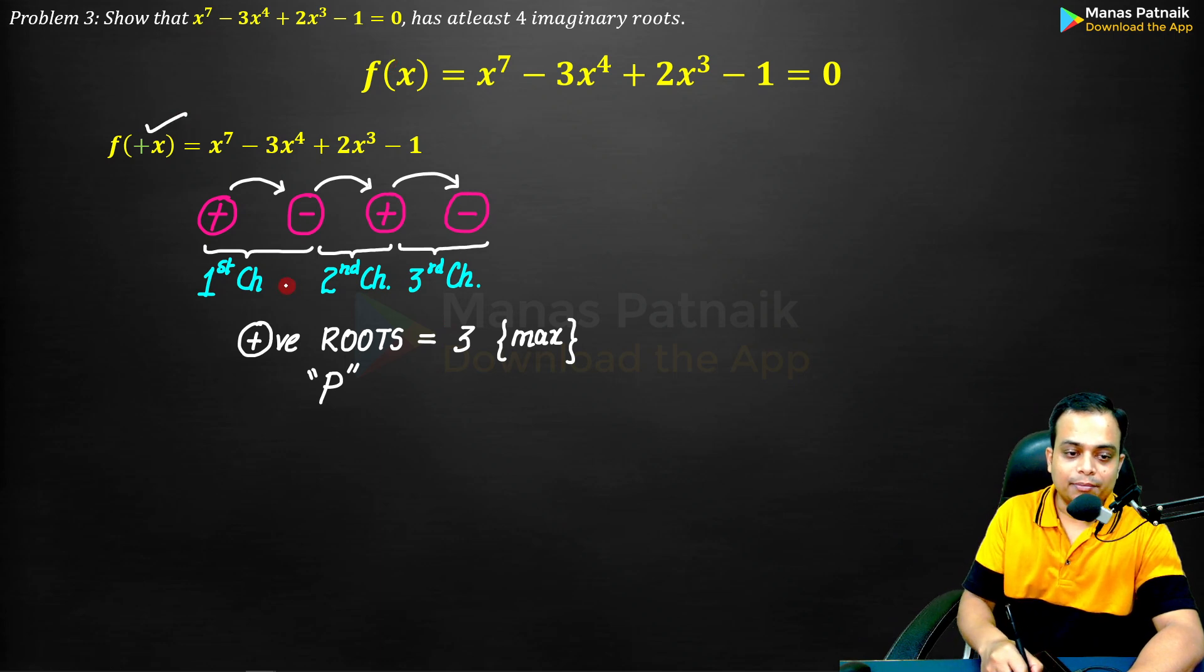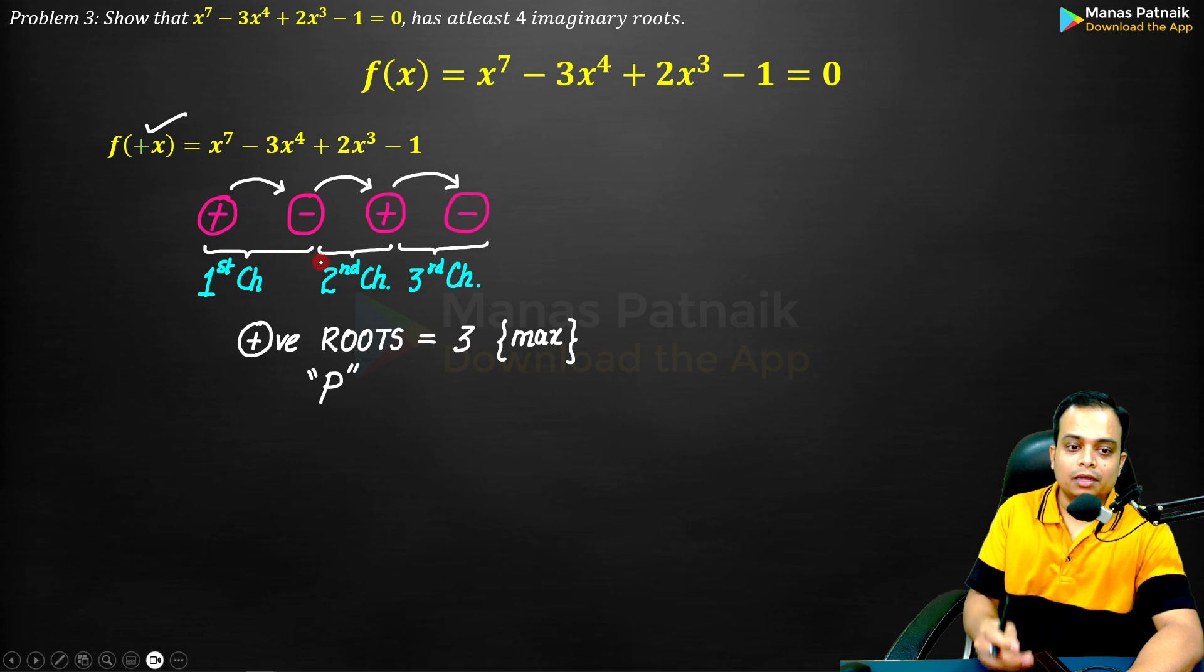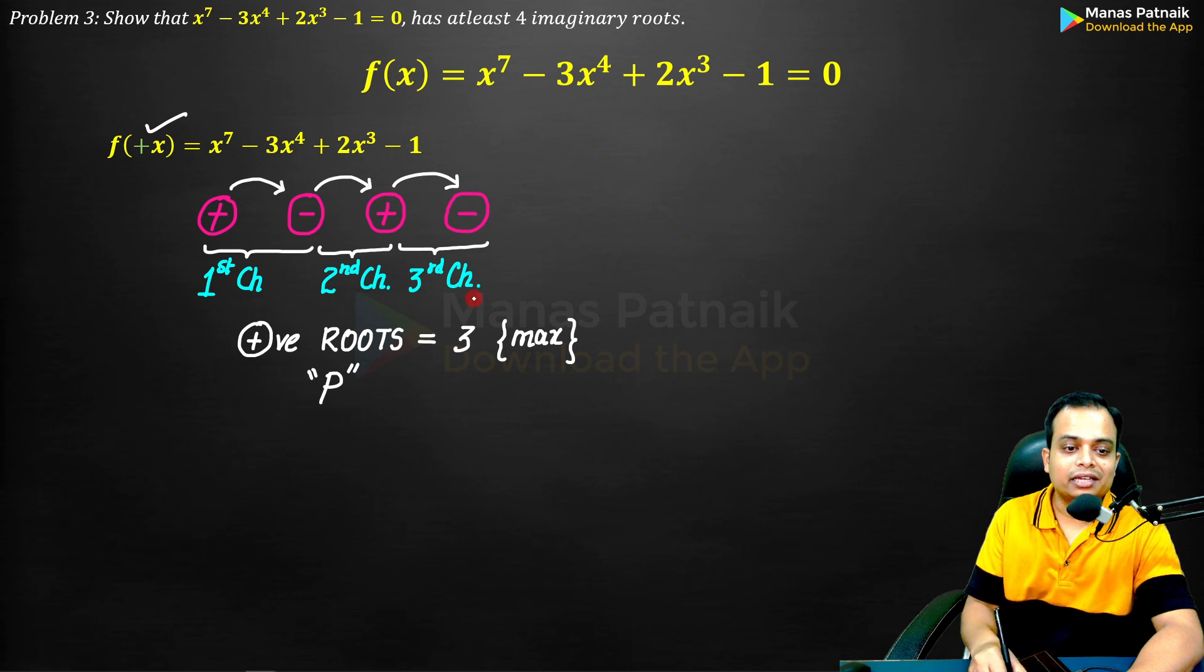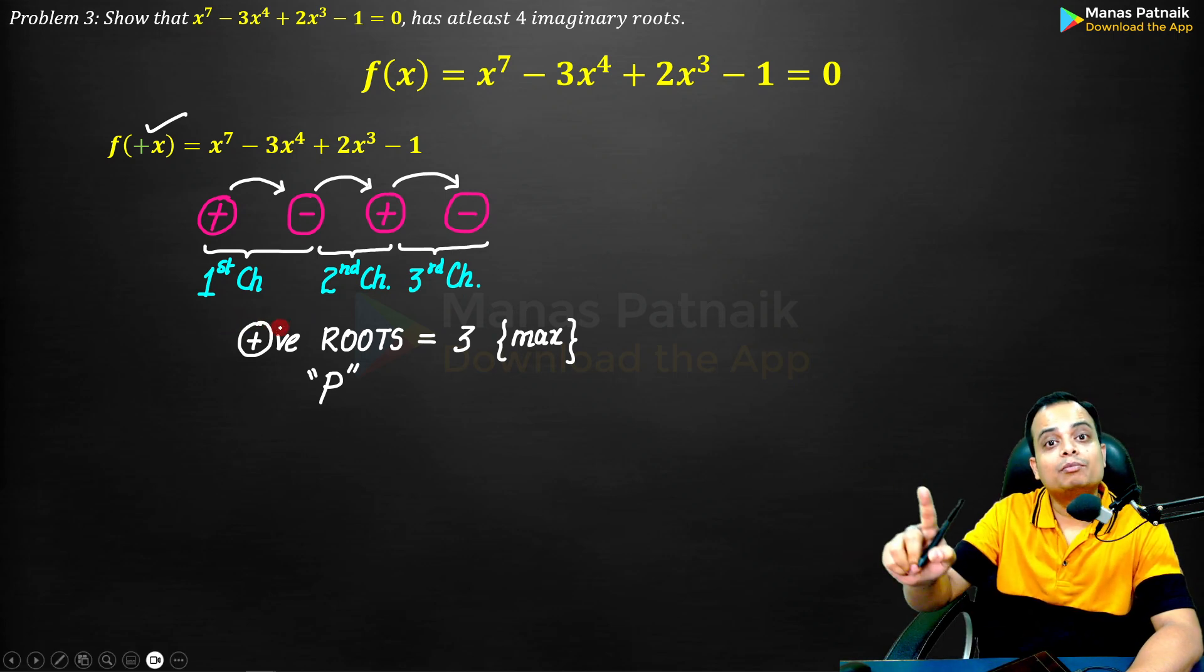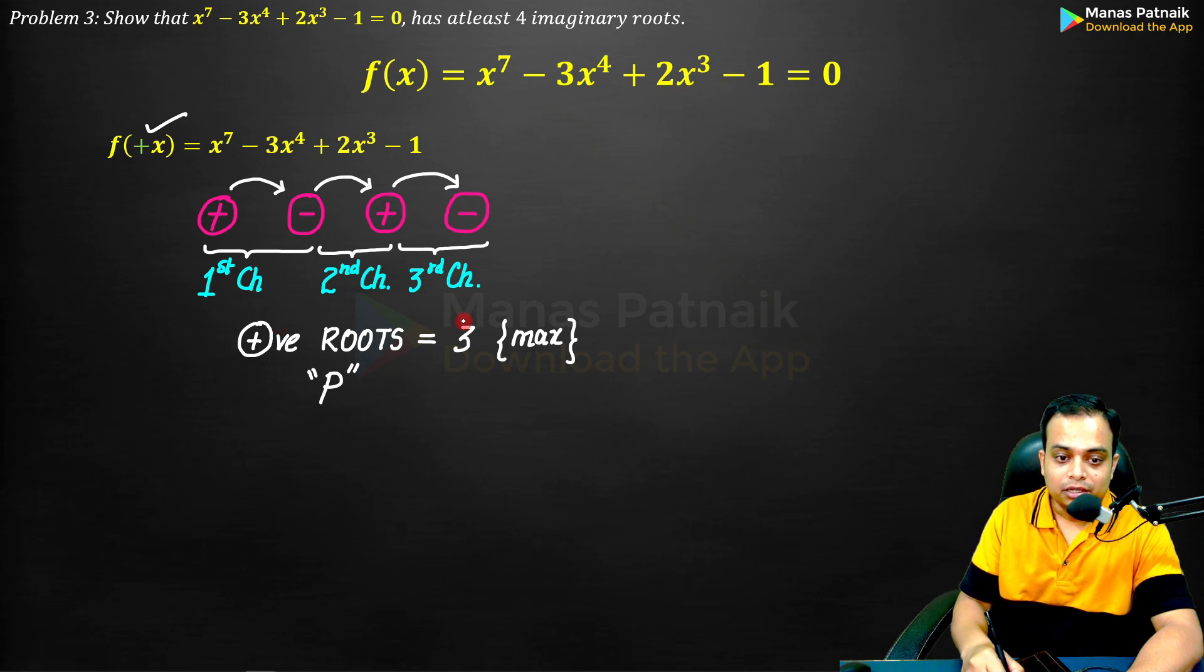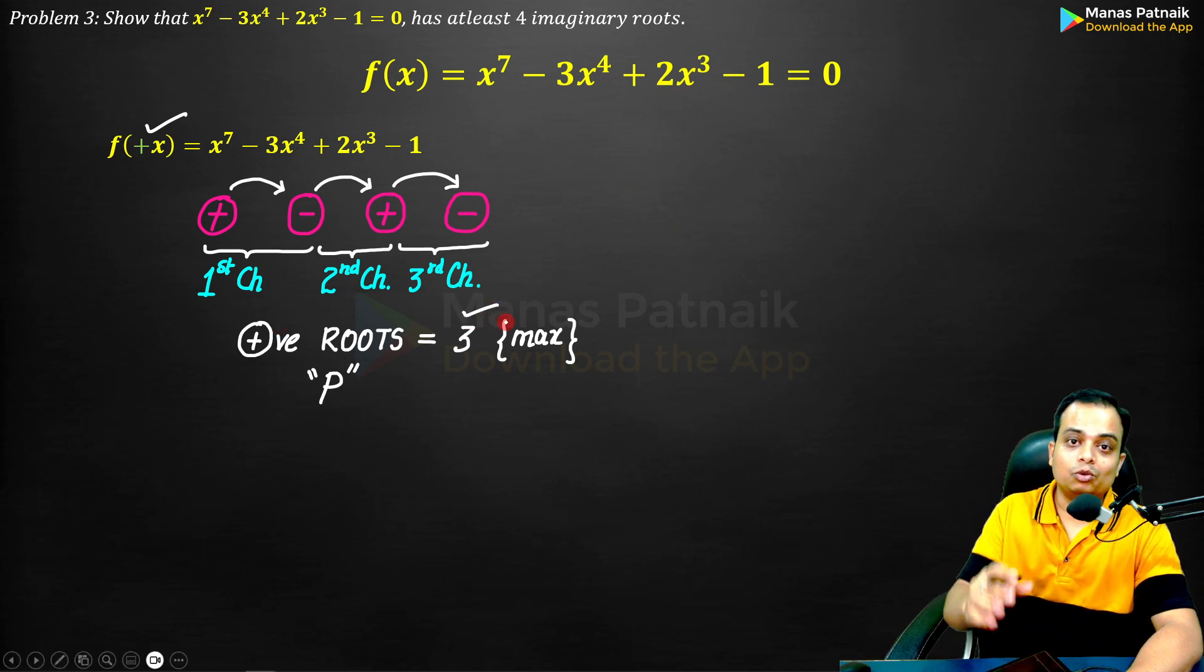When you go for +x, remember the number of sign changes determines the total number of positive roots. Here there were three changes in signs, so you can say very confidently that we cannot have more than three positive roots. Three is the maximum number of positive roots you can have.